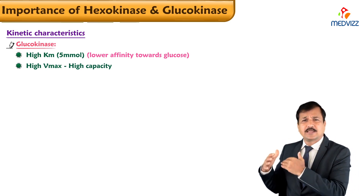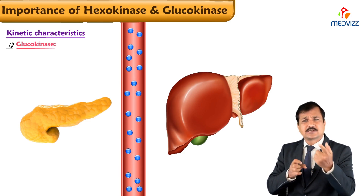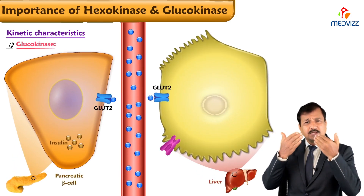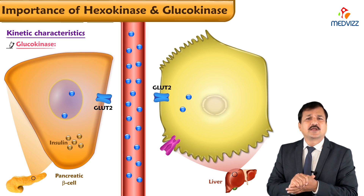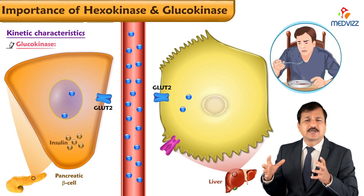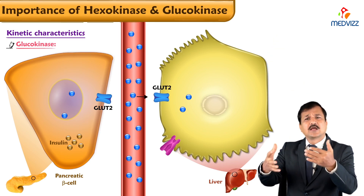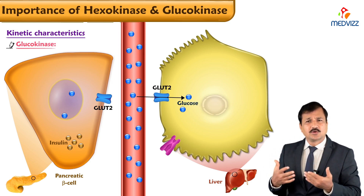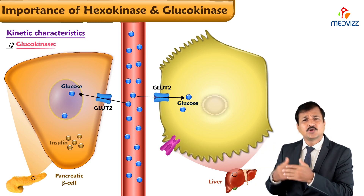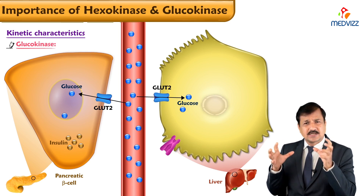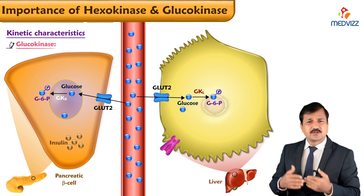Lower affinity but high capacity means the tissues that express glucokinase — the liver and beta cells of the pancreas — will take in glucose only when there is plenty of glucose available in the blood, which happens during the absorptive or postprandial state after a meal. After the meal, when glucose levels are relatively high, the liver allows glucose in via GLUT transporters and beta cells via GLUT2, and inside these cells glucose is converted into glucose-6-phosphate.